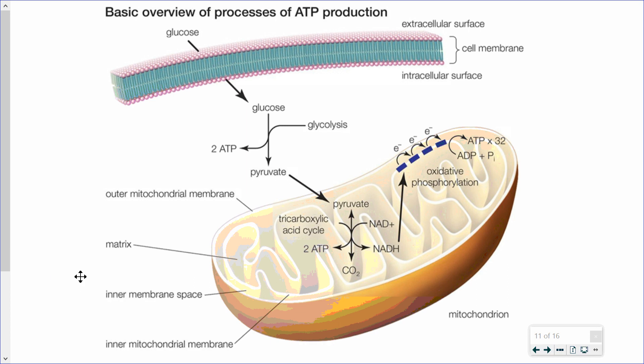This is the second of three lessons on cellular respiration. The first one was on glycolysis. This one will be on what I will refer to as the Krebs cycle, and the last one will be on oxidative phosphorylation.